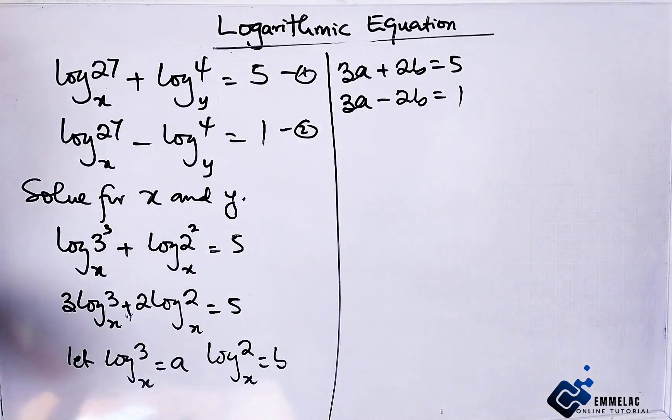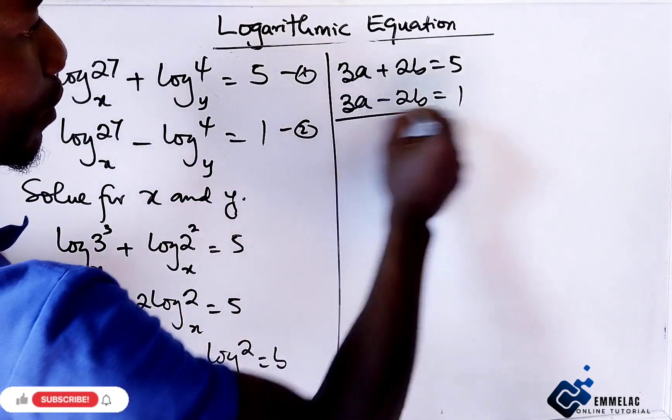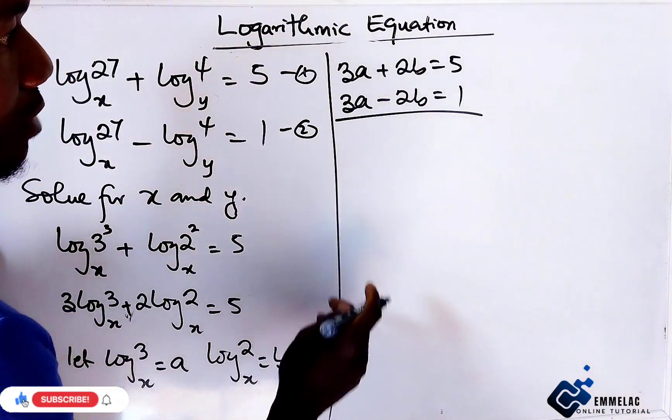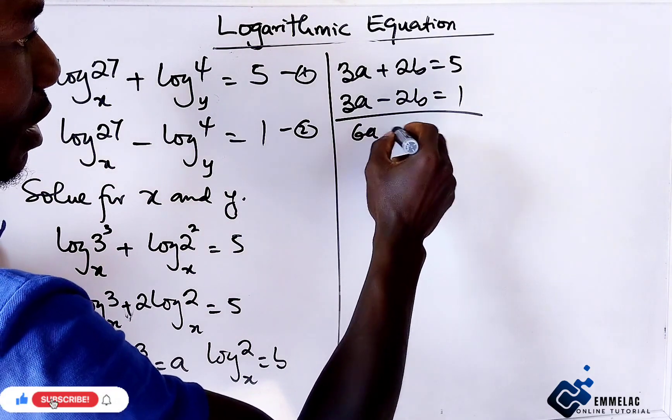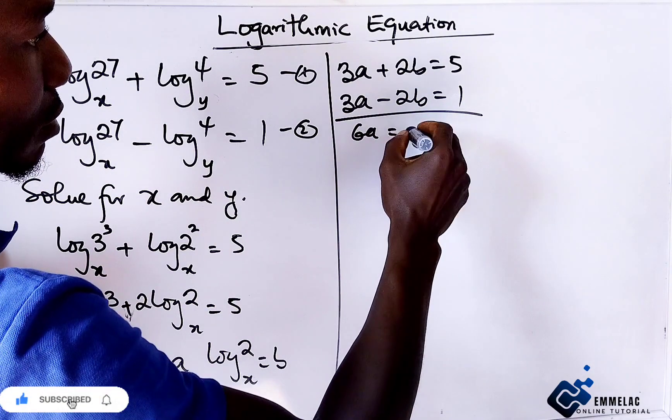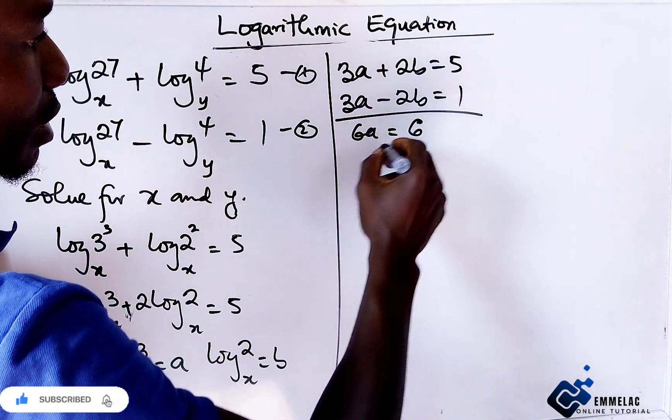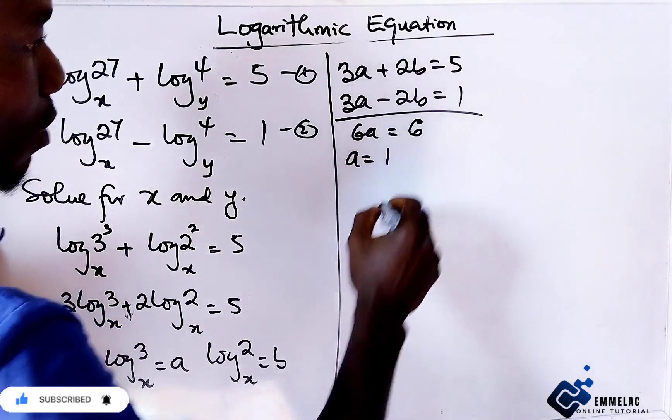From here, let's add both equations. This gives us 6a, this becomes 0, then 6, so a equals 1.